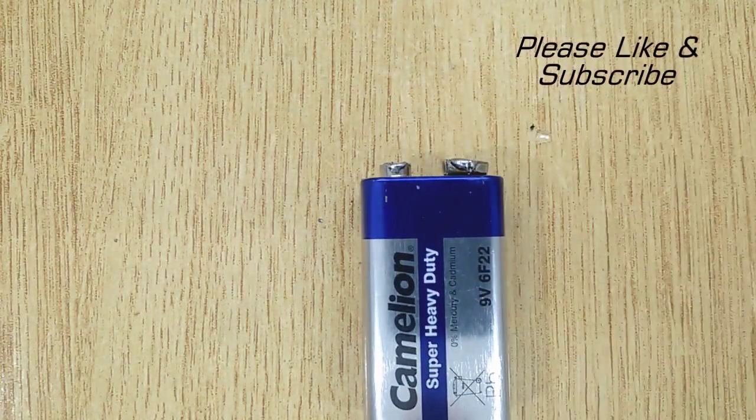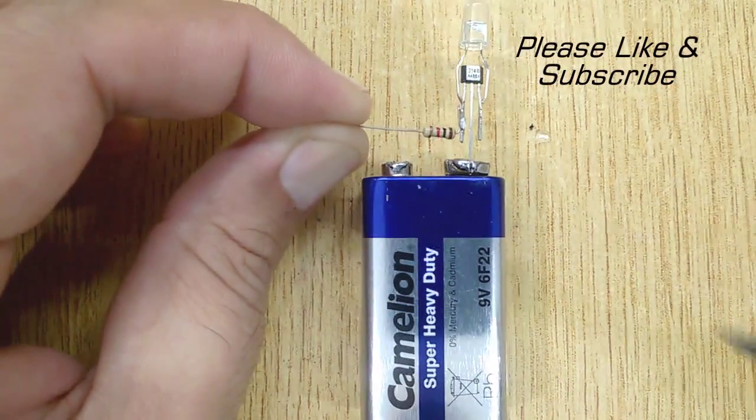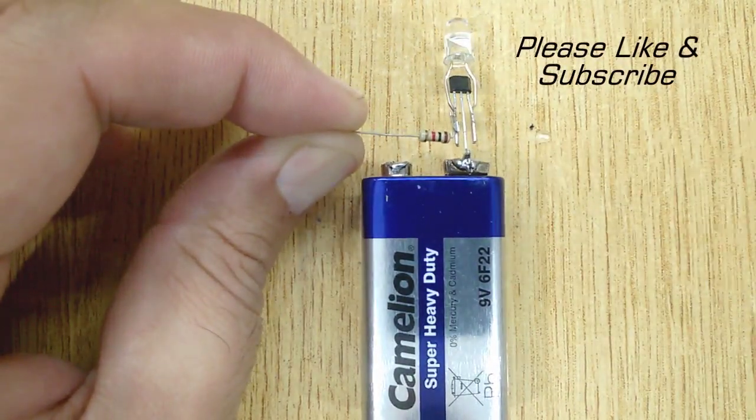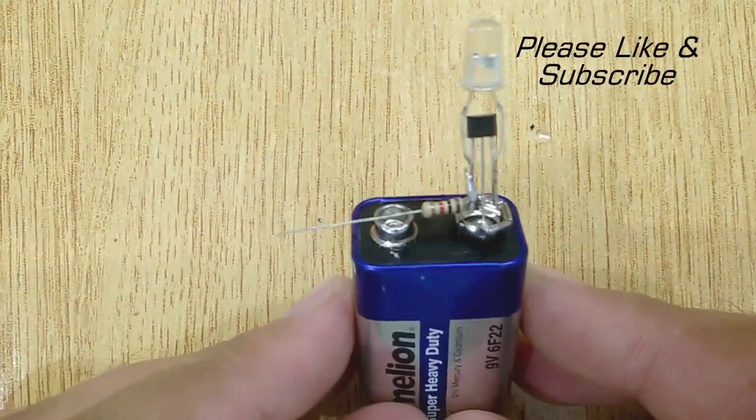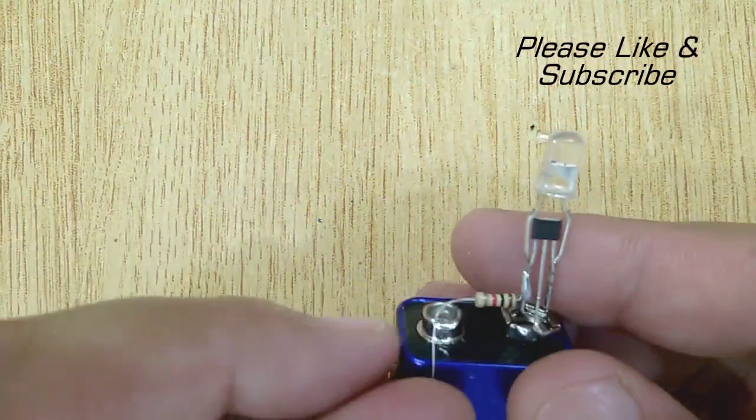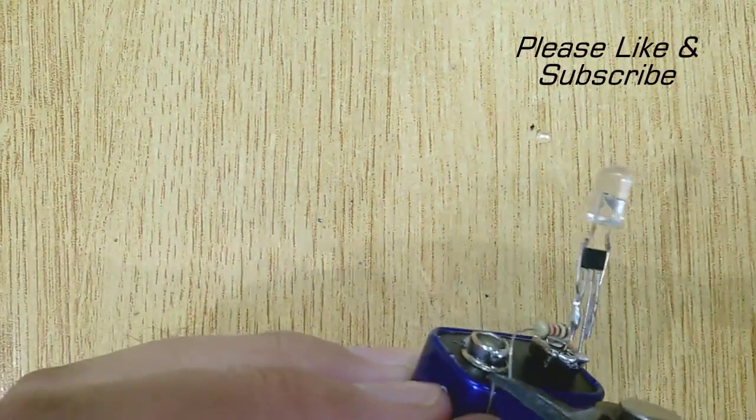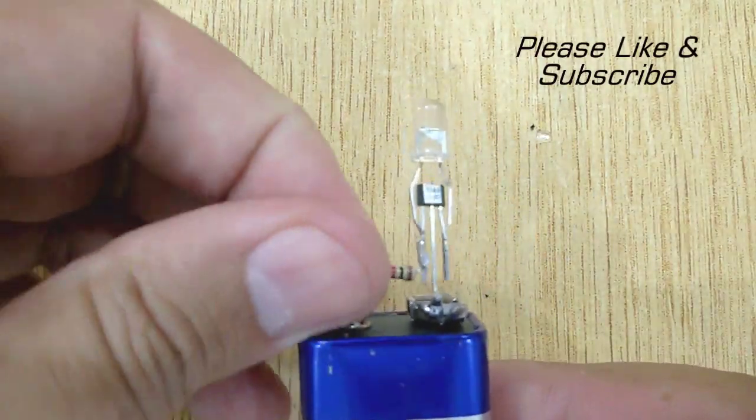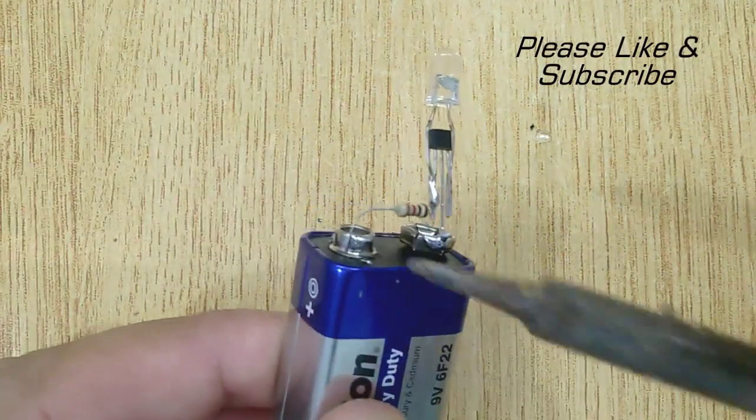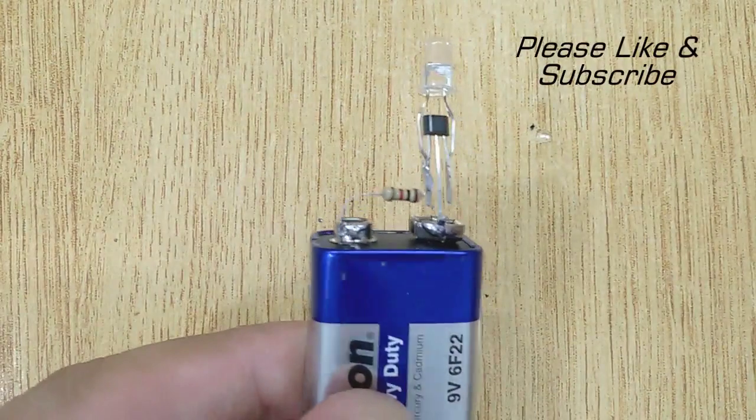Now get a 9 volt battery and solder the second pin of hall effect sensor with the negative terminal of the 9 volt battery. And solder the resistor with the positive terminal of 9 volt battery.